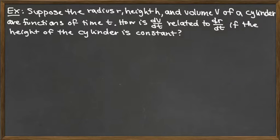Suppose the radius r, height h, and volume V of a cylinder are functions of time t. How is dV/dt related to dr/dt if the height of the cylinder is constant?